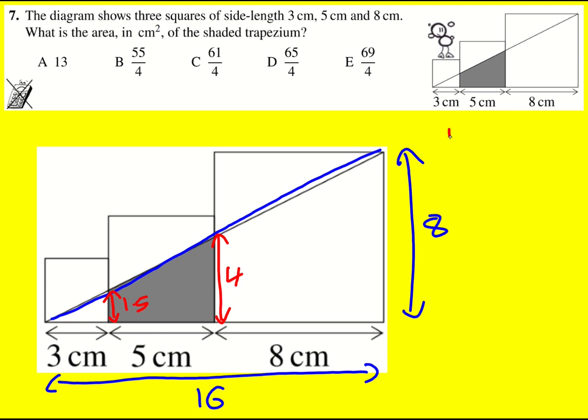So the area of my trapezium is going to be half, 1.5 plus 4 - you add the two parallel sides and divide by 2, then times by the perpendicular height, which is 5. So that's 1.5 times 5.5, which is 11 over 2 times 5, which gives 55 over 4.